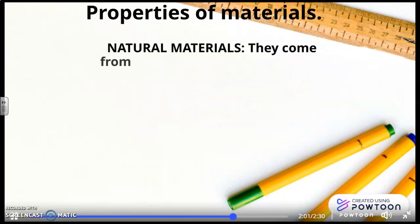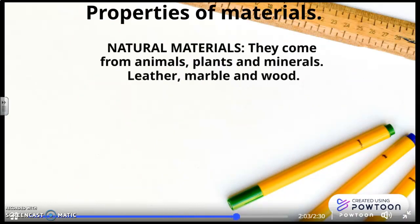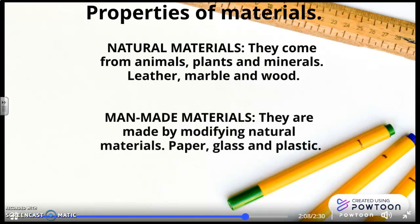Properties of materials. Natural materials. They come from animals, plants, and minerals, such as leather, marble, and wood. And man-made materials. They are made by modifying natural materials, such as paper, glass, and plastic.